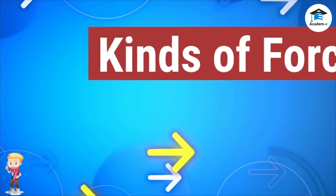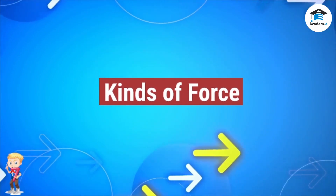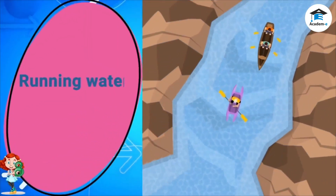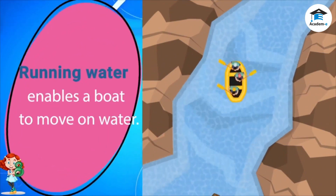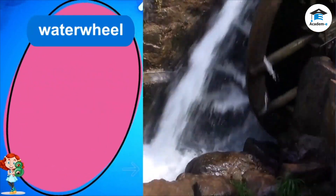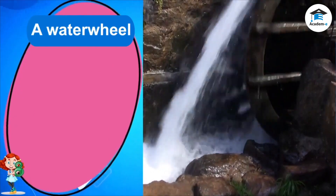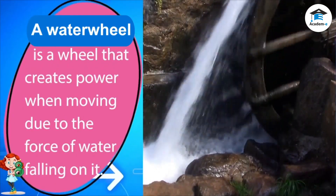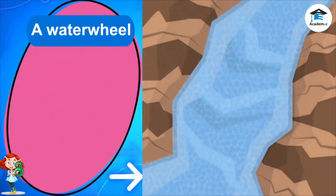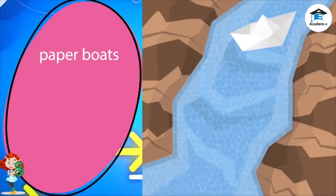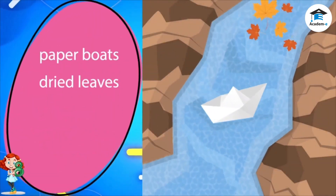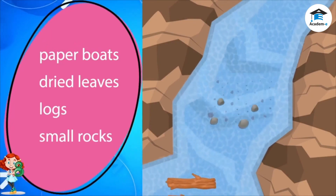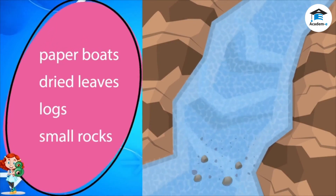Now, let's talk about the other kinds of force that make things move and work. Running water enables a boat to move on water. It makes waterwheels turn. A waterwheel is a wheel that creates power when moving due to the force of water falling on it. Running water also moves paper boats, dried leaves, logs, small rocks in the river, and other objects from one place to another.